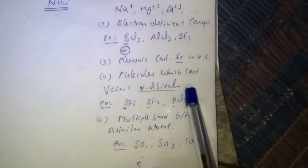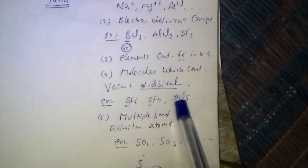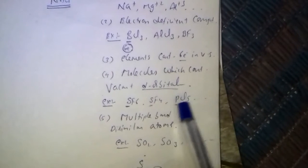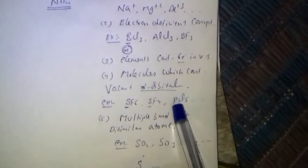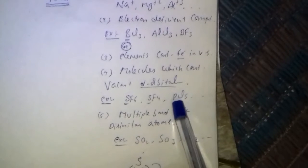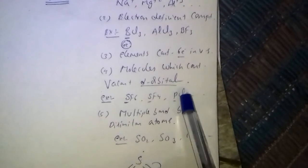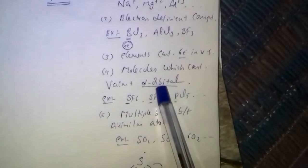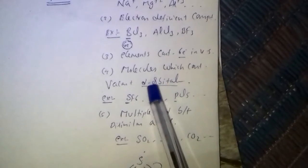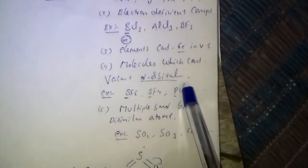Molecules which contain vacant d-orbitals, such as SF6, SF4, and PCl5, have vacant 3d orbitals present in sulphur and phosphorus. They accept lone pairs of electrons into those vacant d-orbitals and act as Lewis acids.